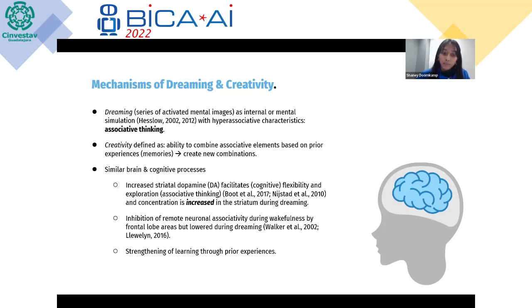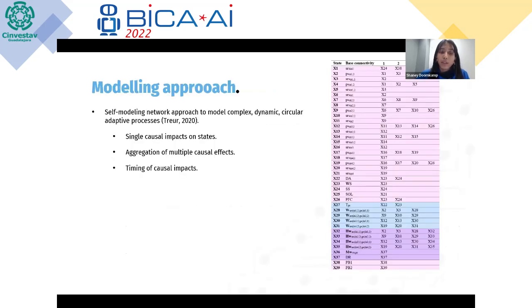With this basis, I'll bring you through our modeling approach, which is a self-modeling network approach that models complex, dynamic, and adaptive processes, including single causal impacts, aggregation of multiple impacts, and modeling the timing of these impacts. On the left I have my descriptive model. The pink plane is the base layer, which is just a singular situation where effects are happening, not really adaptive or dependent on anything else.